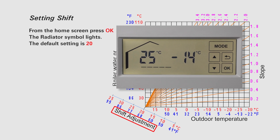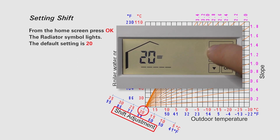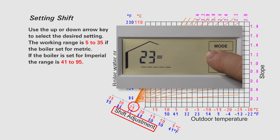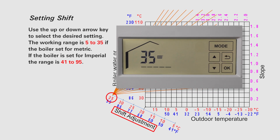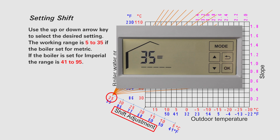From the home screen, press OK. The radiator symbol lights. The default setting for shift is 20. Use the up or down arrow key to select the desired setting. The working range is 5 to 35 if the boiler is set for metric. If the boiler is set for imperial, the range is 41 to 95.